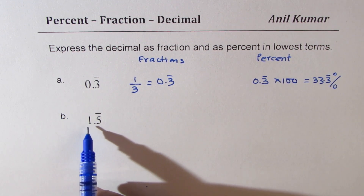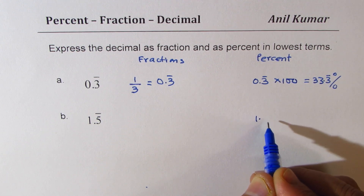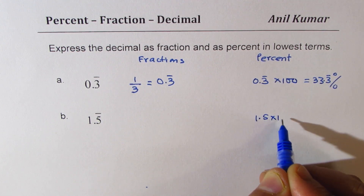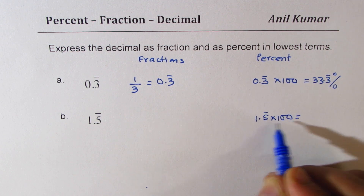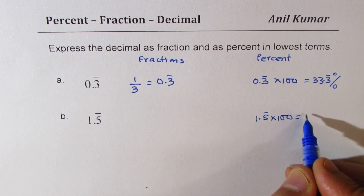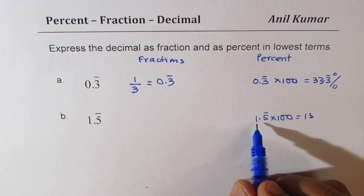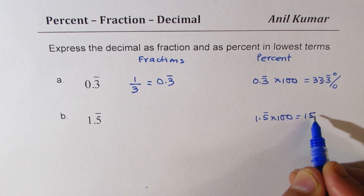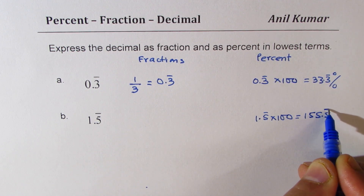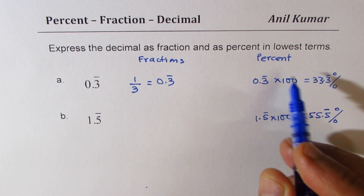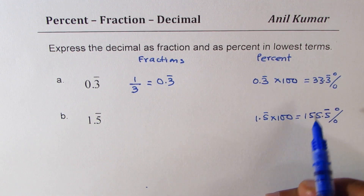Similarly for 1.5 recurring, we could write this as 1.5 recurring times 100, which gives us 155.5 recurring in percent — more than 100%. As far as percent is concerned, it is kind of very simple.